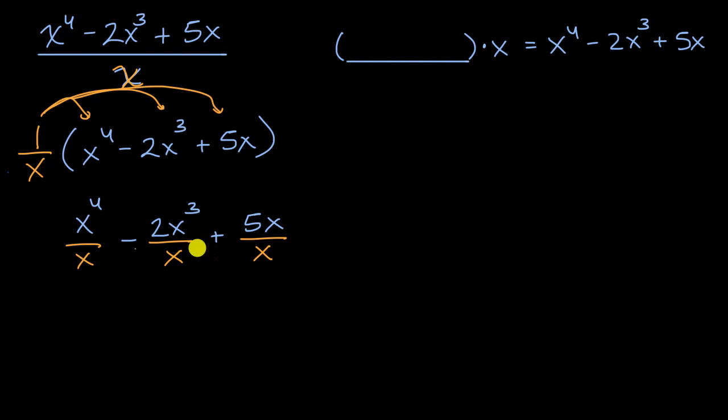And so what are each of these going to be equal to? x to the fourth divided by x, if I have four x's that I'm multiplying together and then I divide by x, that's going to be equivalent to x to the third power. So this right over here is equal to x to the third. You could also get there from your exponent properties. In the denominator you have an x to the first power, and so you would subtract the exponents. You have the same base here, so that's x to the third.